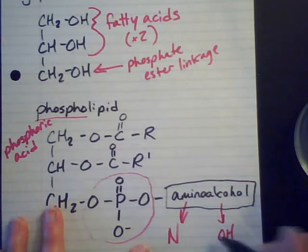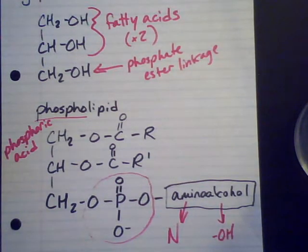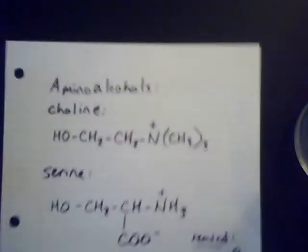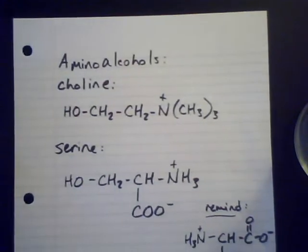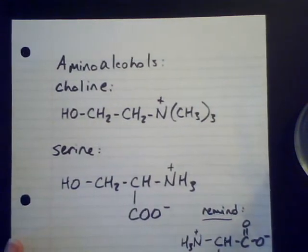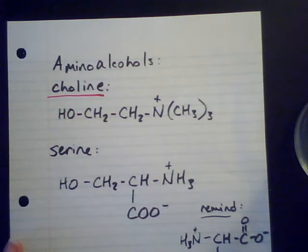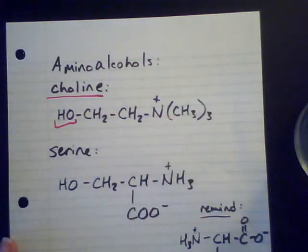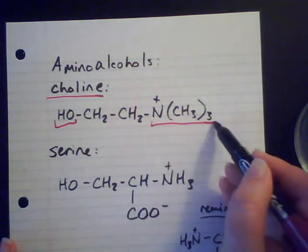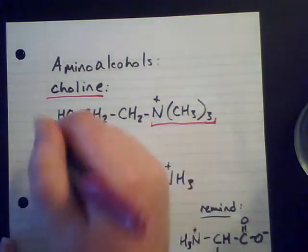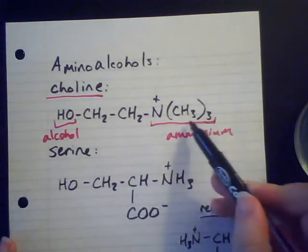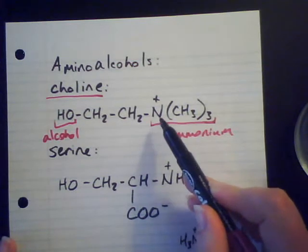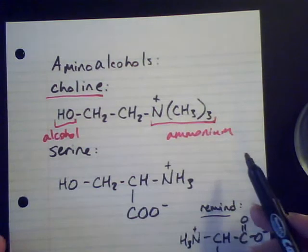The alcohol, of course, is your hydroxyl group. So we're going to have some combination of those. I want to give you some common amino alcohols. The first one is choline. Here's our alcohol side - there's our hydroxyl group. And then we have an ammonium group, not just an amine group. It has three methyl groups on the nitrogen, so our nitrogen has a resulting positive charge, just like an ammonium. So that's choline.